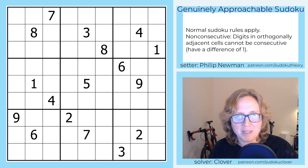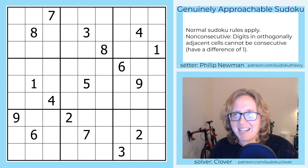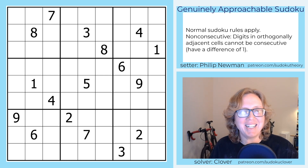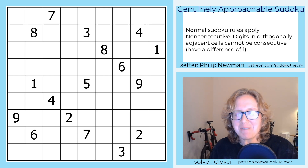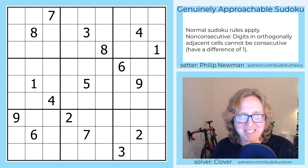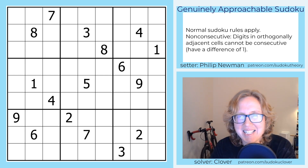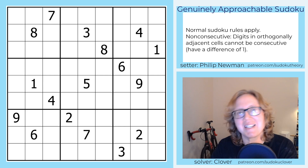This is a walkthrough of Philip Newman's 'evetuchesnok,' which is just the word 'consecutive' spelled backwards, riffing on the fact that this is a non-consecutive Sudoku.